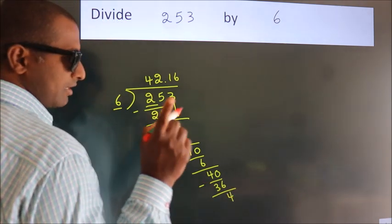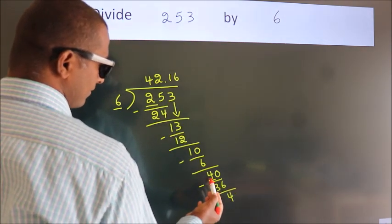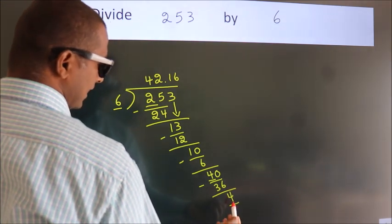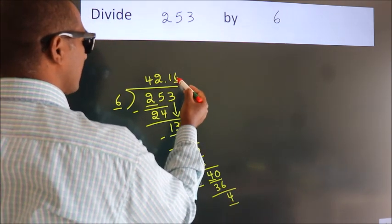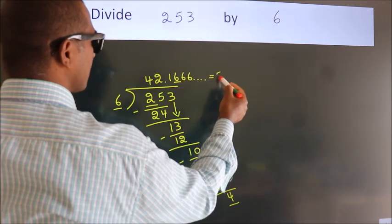Now, observe. We had 4 here, and we got 4 again. That means this number keeps repeating. So, this is our quotient.